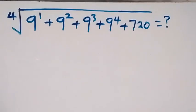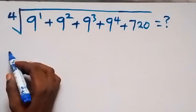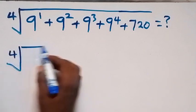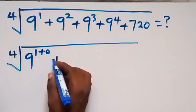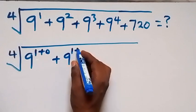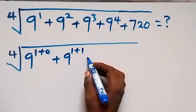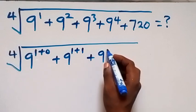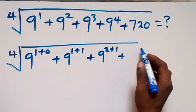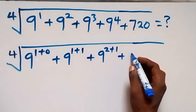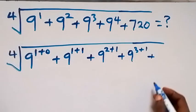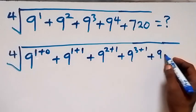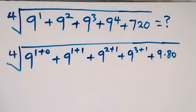Hello, you are welcome. How to solve this nice exponent problem involving roots. We write this as the fourth root of 9 raised to power 1 plus 0, then plus 9 raised to power 1 plus 1, same thing as 9 raised to power 2, then plus 9 raised to power 2 plus 1, then plus 9 raised to power 3 plus 1, then plus 9 multiplied by 80, which gives us 720.